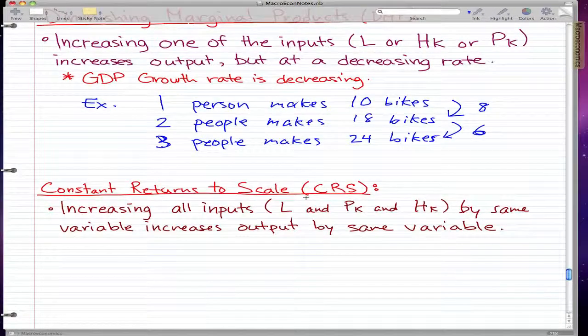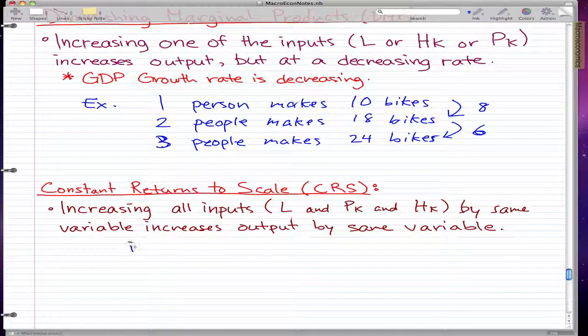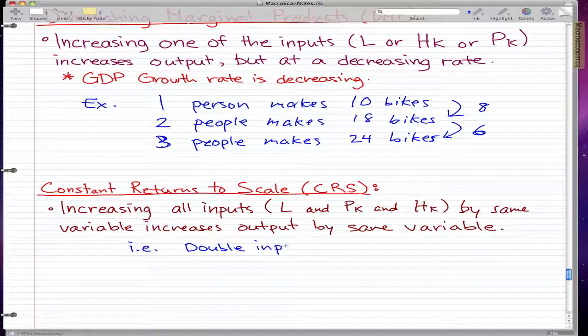The second thing I want to talk about is constant returns to scale, or CRS. What you need to know is that by increasing all the inputs—labor, physical capital, and human capital—by the same variable, that increases output by the same variable as well. If we double our inputs, that pretty much equates to doubling our outputs.